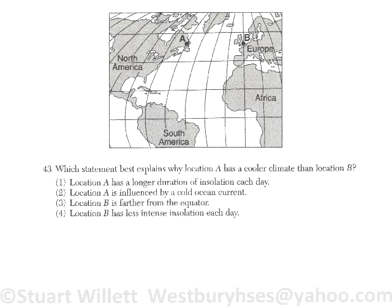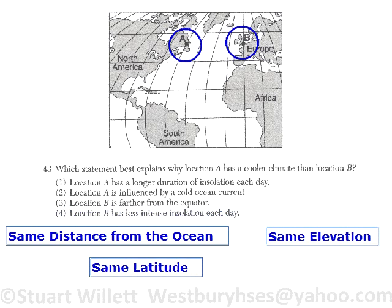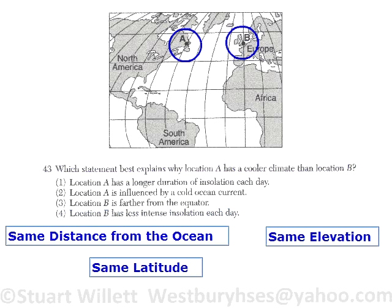The map below shows the locations of A and B on Earth's surface, at the same distance from the ocean, at the same elevation above sea level, and at the same latitude. Which statement best explains why location A has a cooler climate than location B?